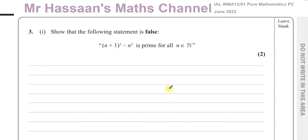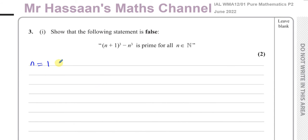We've got to prove that when we use the natural numbers and put them into here, the statement says every time you're going to get a prime number. But we have to prove this statement is false — that there will be at least one natural number which causes this not to give us a prime. So we'll start going through the natural numbers starting from 1 and see if it gives us a prime number.